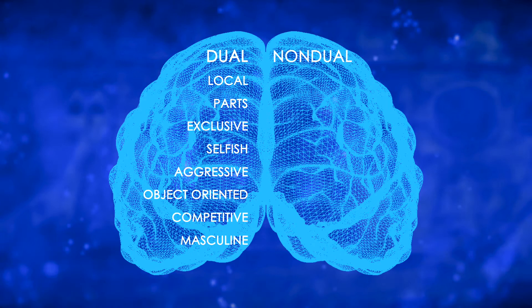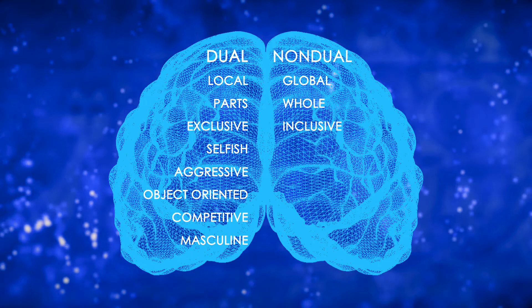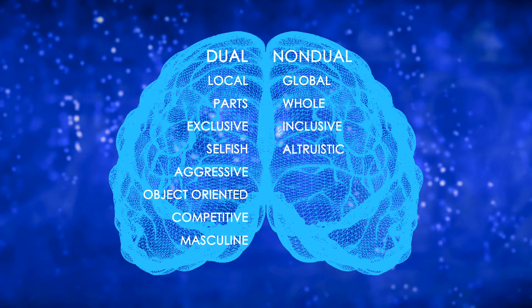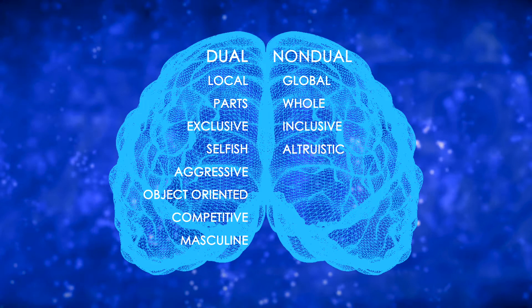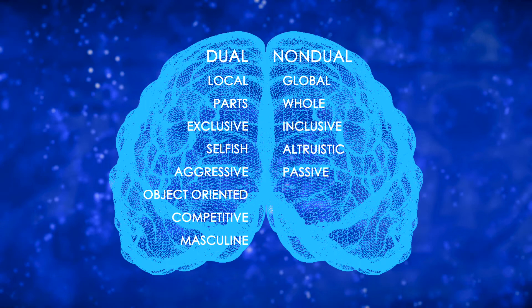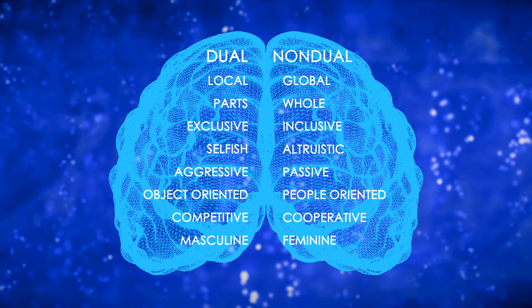To complement all of this, our non-dual operating system gives us a global viewpoint that views reality as a whole. This makes its view inclusive. Being inclusive, it sees everything within our sight and imagination. This gives us a sense of abundance that makes us naturally altruistic. Our sense of abundance leaves us feeling satisfied, which gives us a passive feeling, like the one found in deep meditation. Our non-dual operating system is people-oriented and cooperative.